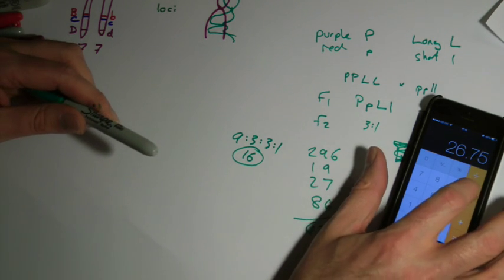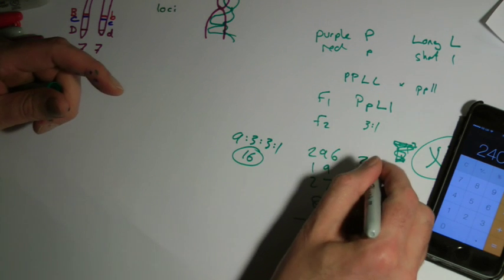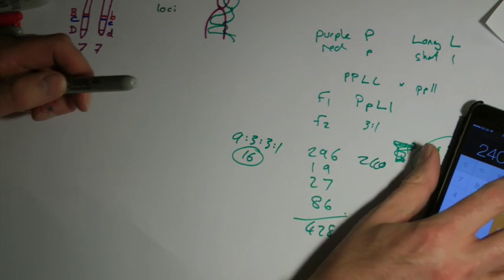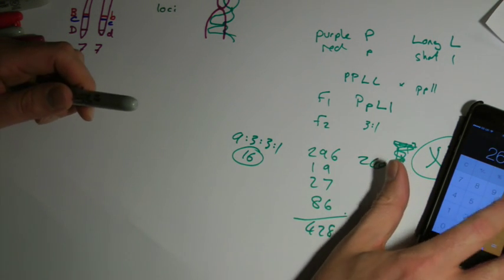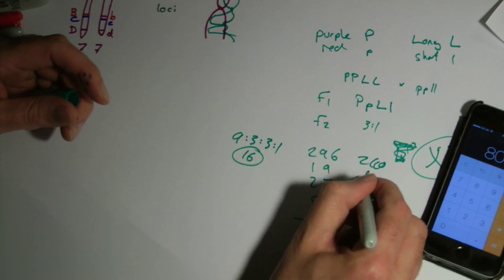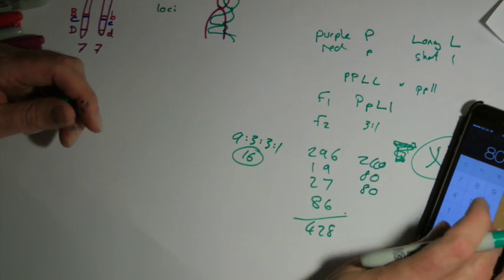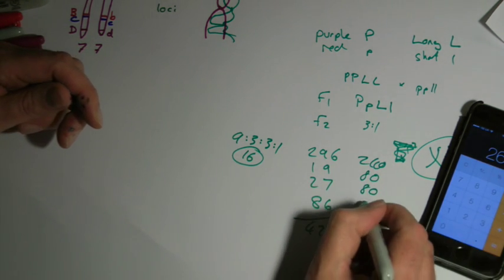And if I multiply that up by 9, I'd expect to see 240, let's go back down again, 3 and 80. I'm not rounding these off, but you get the idea.